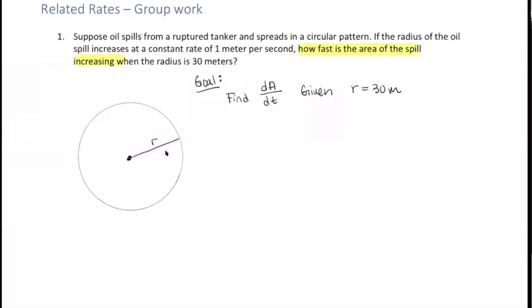Well, the area of a circle is π R squared. And now we're going to use implicit differentiation to find the derivative of both sides with respect to T. So let me write that down.